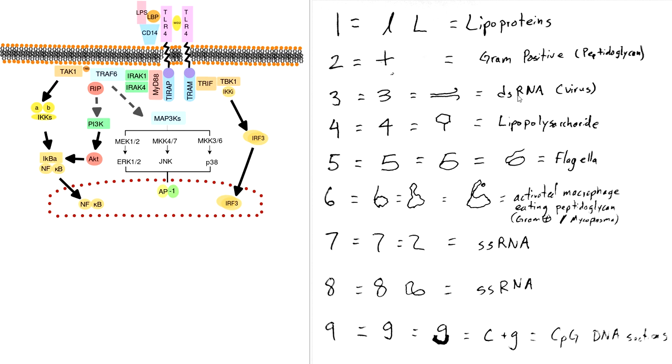But the DNA, or sorry, double-stranded RNA, single-stranded RNA, single-stranded RNA, and the DNA, CpG DNA are all intracellular. So those are on the inside. So if you just remember where they are, it'll make sense. Hopefully that helps, and don't forget to read the Abbas Immunology book.